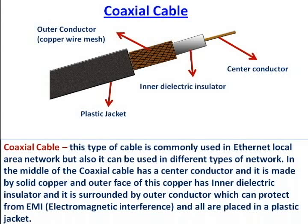In the middle of the coaxial cable there is a center conductor, and it is made of solid copper. The outer face of this copper has an inner dielectric insulator, and it is surrounded by an outer conductor which can protect from EMI — electromagnetic interference. All of these are placed in a plastic jacket.